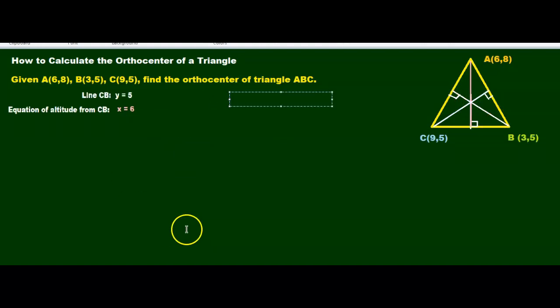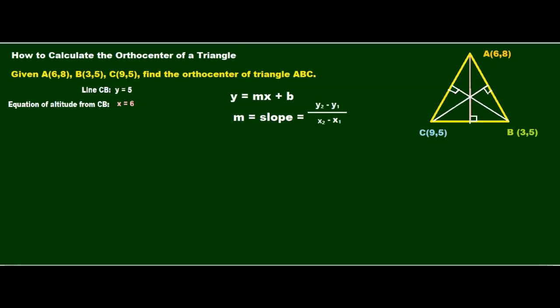If you recall, to find our equation of the line, we're going to use Y equals MX plus B. And if you also recall, your M is your slope, which can be found by the formula Y2 minus Y1 over X2 minus X1.